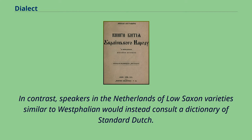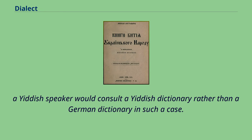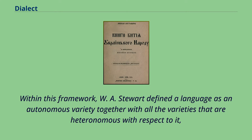In contrast, speakers in the Netherlands of Low-Saxon varieties similar to Westphalian would instead consult a dictionary of standard Dutch. Similarly, although Yiddish is classified by linguists as a language in the Middle High German group and has some degree of mutual intelligibility with German, a Yiddish speaker would consult a Yiddish dictionary rather than a German dictionary in such a case.